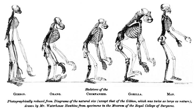Animals are multicellular eukaryotes distinguished from plants, algae, and fungi by lacking cell walls. All animals except sponges have bodies differentiated into separate tissues, including muscles, which move parts of the animal by contracting, and nerve tissue, which transmits and processes signals. The earliest widely accepted animal fossils are the rather modern-looking cnidarians — the group that includes jellyfish, sea anemones and hydra — possibly from around 580 Ma, although fossils from the Doushantuo formation can only be dated approximately.